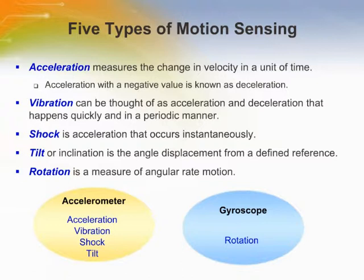Rotation differs from the other modes because it may take place without any change in acceleration. An accelerometer is used to detect the first four modes of motion. Rotation is measured by a gyroscope.